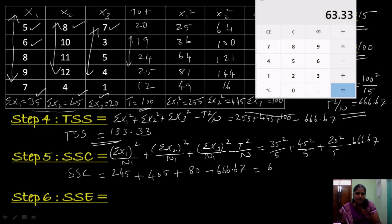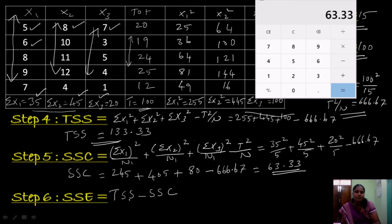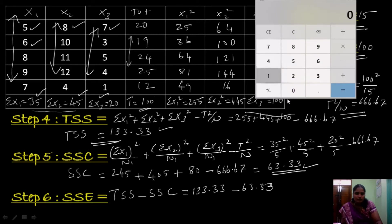The next step is we calculate SSE, that is sum of squares within samples, calculated using the formula TSS minus SSC — total sum of squares minus sum of squares between samples. TSS is 133.33 minus SSC is 63.33, so subtracting we get 133.33 minus 63.33, we get the total as 70. So our SSE is 70.